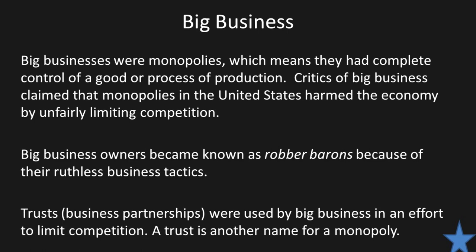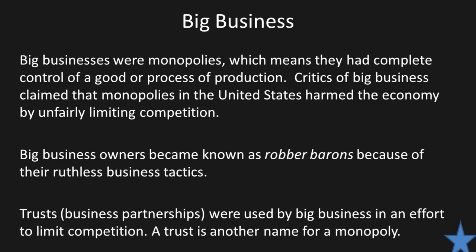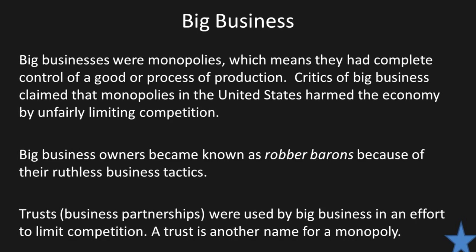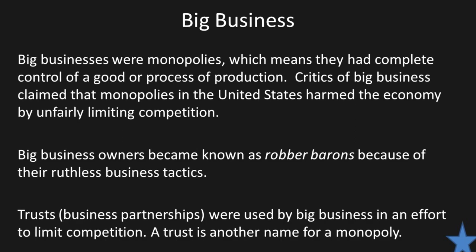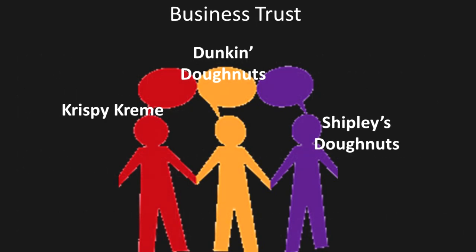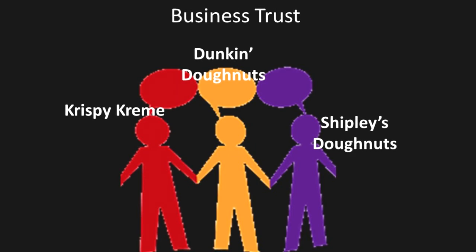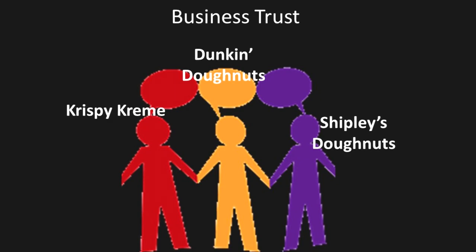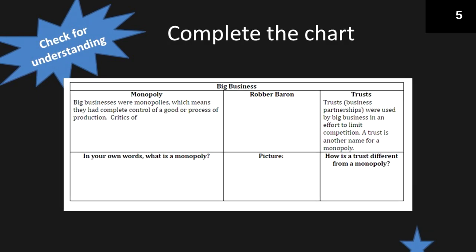Big business owners became known as robber barons because of their ruthless business tactics. There's also another thing called a trust. Trusts are like business partnerships used by big businesses in an effort to limit competition — a trust is another name for a monopoly. In a business trust, Krispy Kreme, Dunkin Donuts, and Shipley's Donuts could all be the same company operating under different names, making it seem like you have a choice when in reality it all goes back to the same owner.